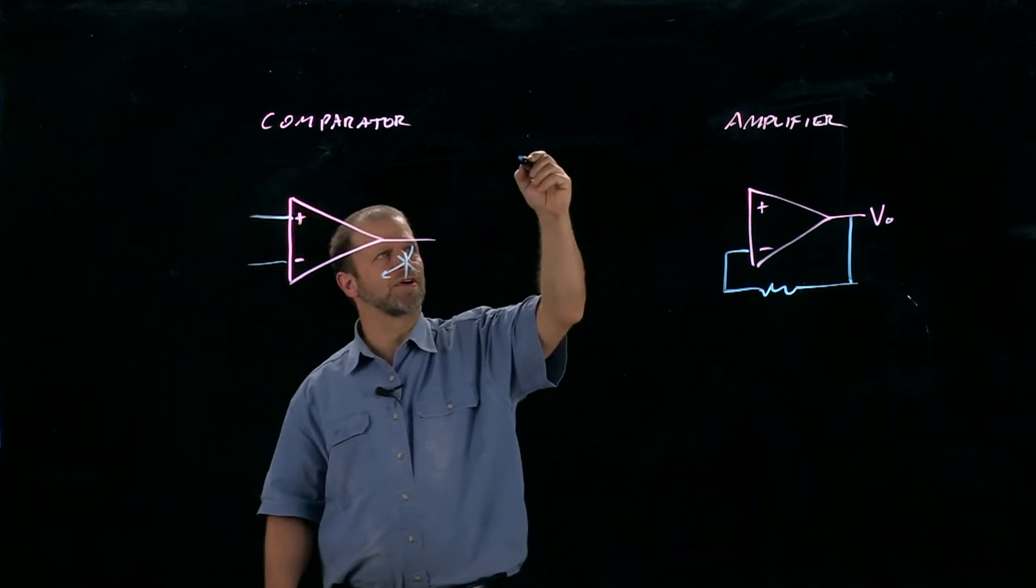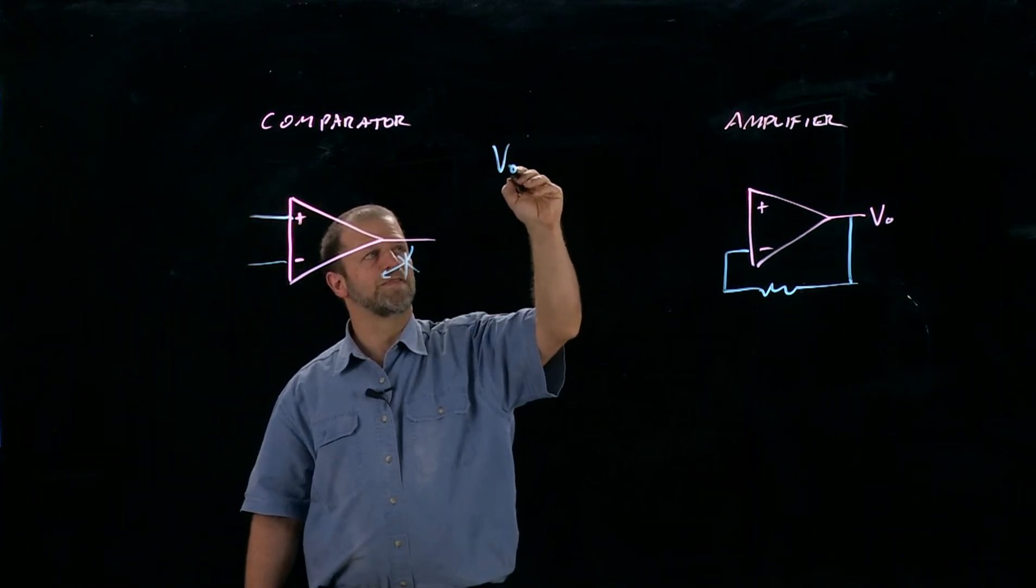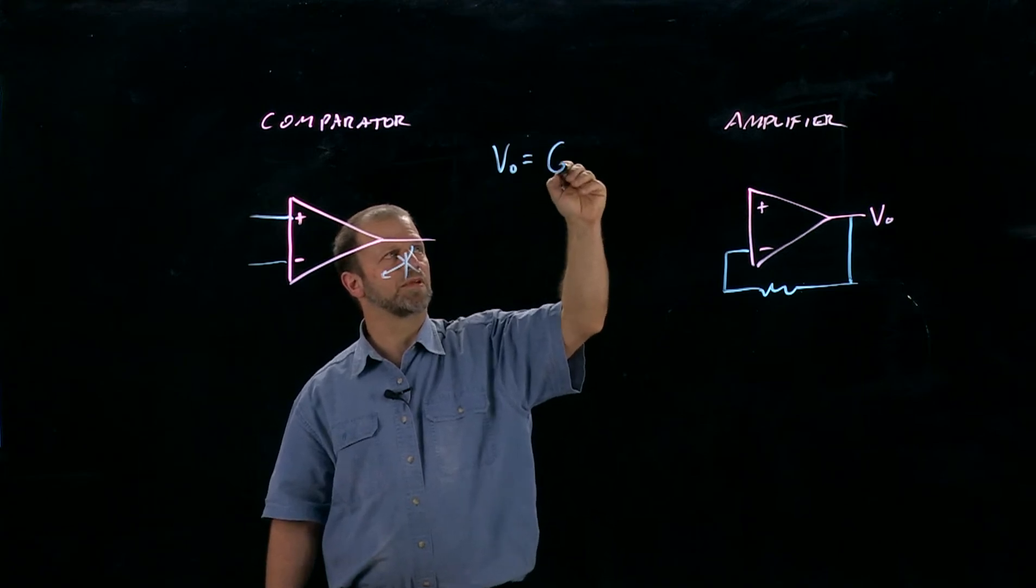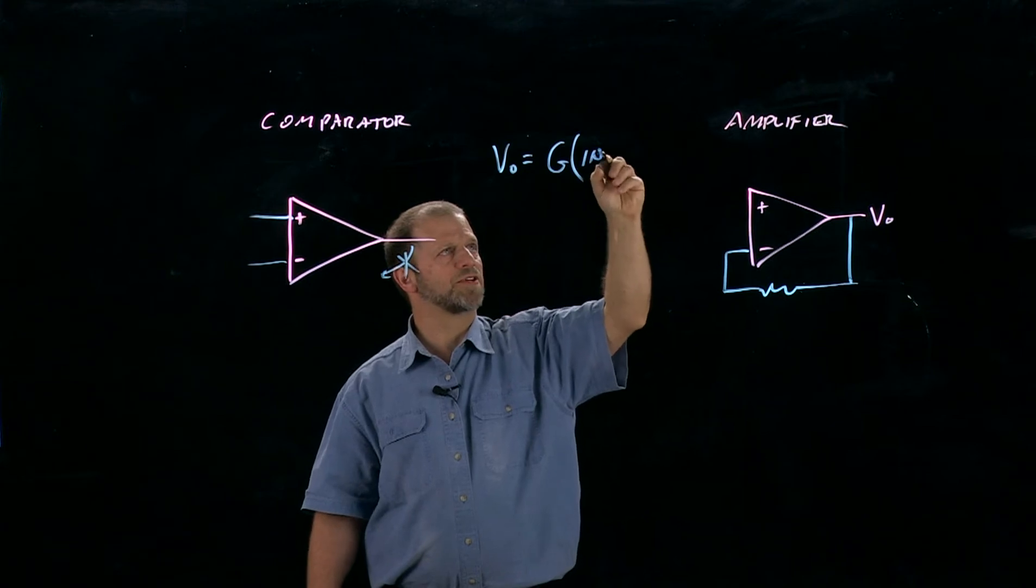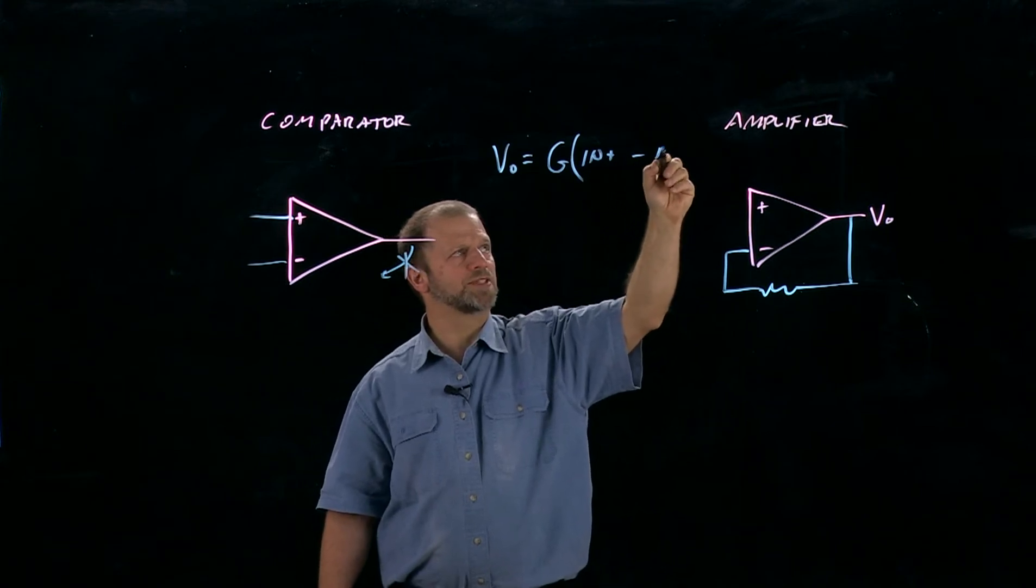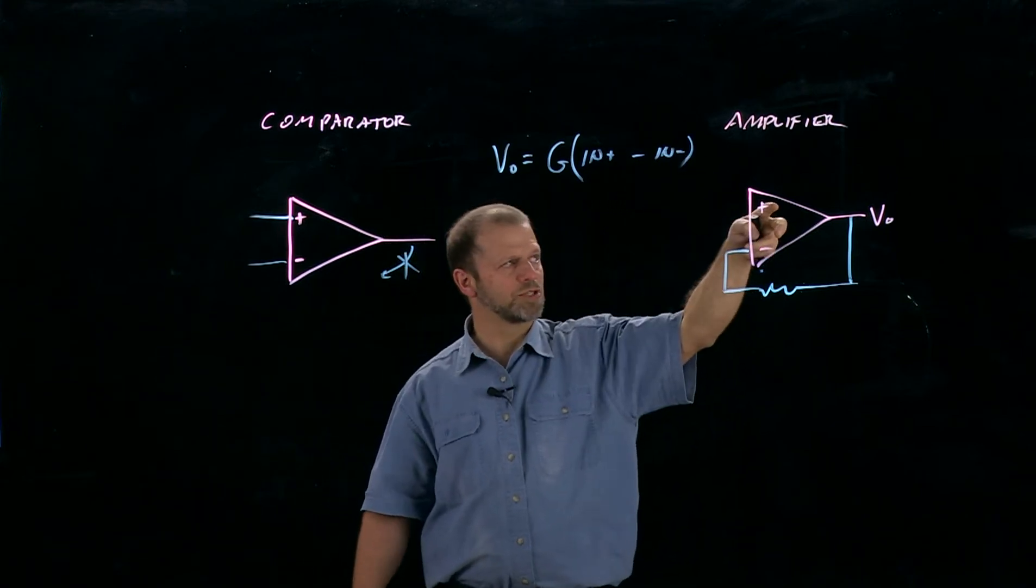In both cases, the amplifier is really following the rule: V out is equal to some, in principle, infinite number G, times the difference of the two voltages, V plus minus V minus, the difference of the two voltages at these two inputs.